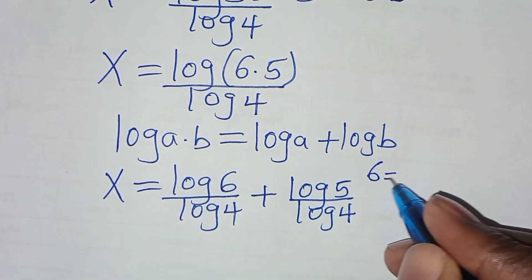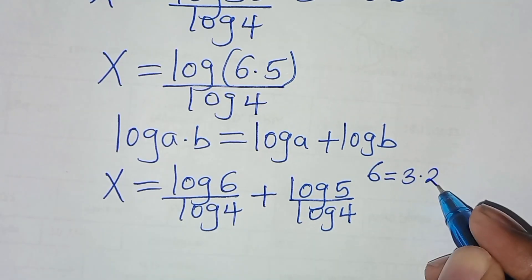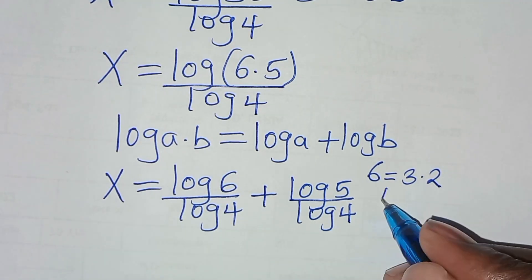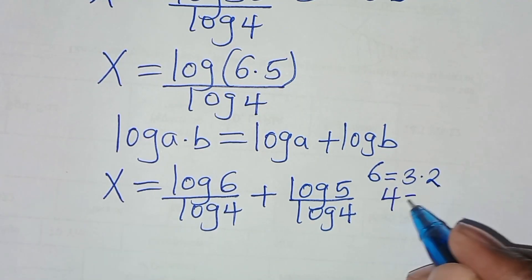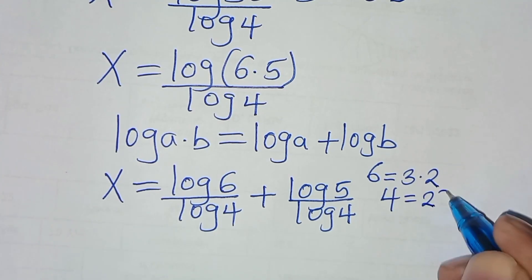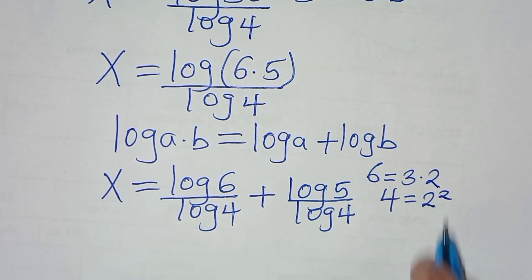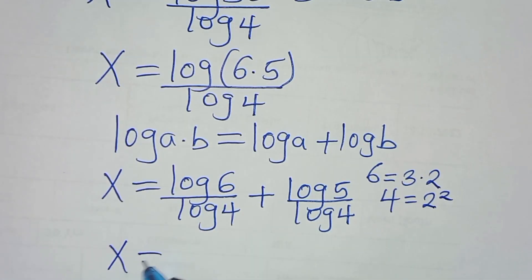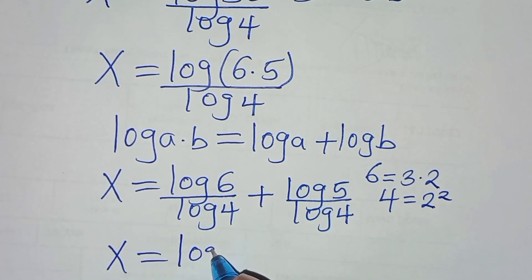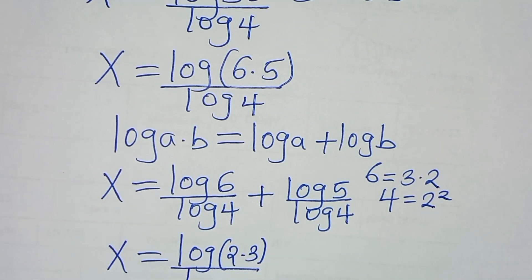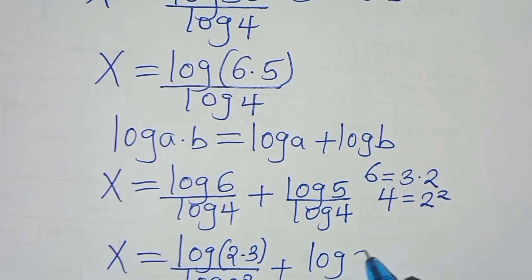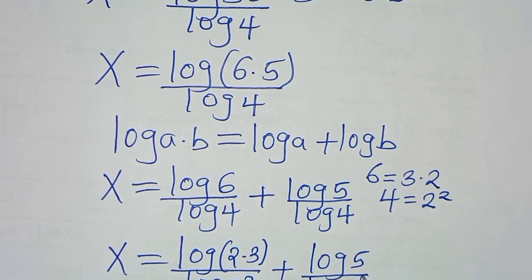The next step is that we can express 6 as 3 times 2, and we can express 4 as 2 to the power 2. So this implies that x equals log(2 times 3) divided by log(2²), plus log 5 divided by log(2²).